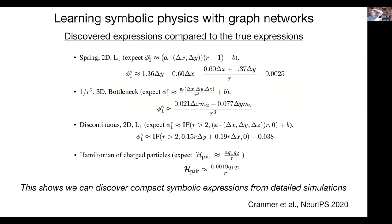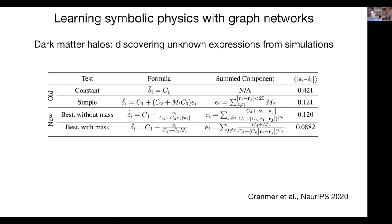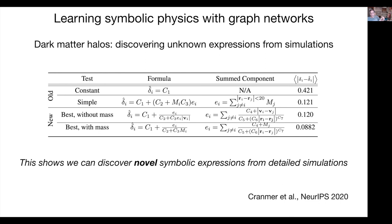This is proof of concept that we can discover compact symbolic expressions from detailed simulations. The reason we don't do symbolic regression directly on raw data is that we need to isolate it to the force/edge function within the model, and we can play games in the neural network to reduce dimensionality that would otherwise be difficult with genetic algorithms directly. We've also tried this on dark matter halo simulations and get expressions that weren't previously published but are more accurate at describing the overdensity than the best previously known formulas.